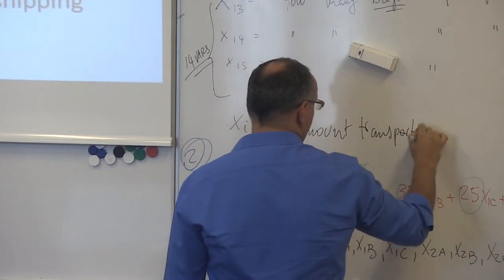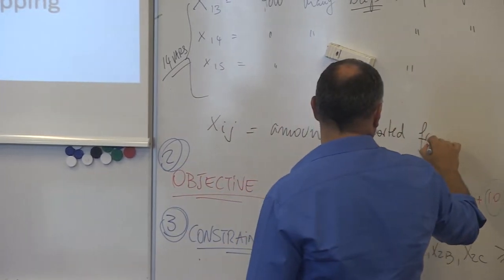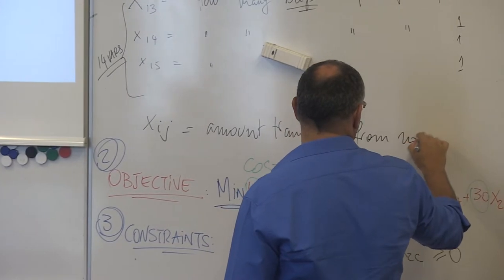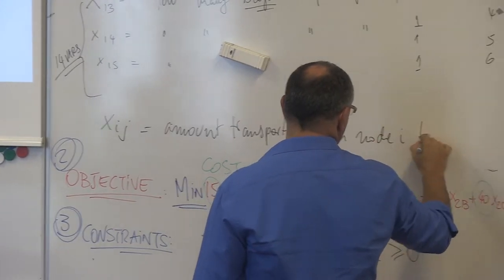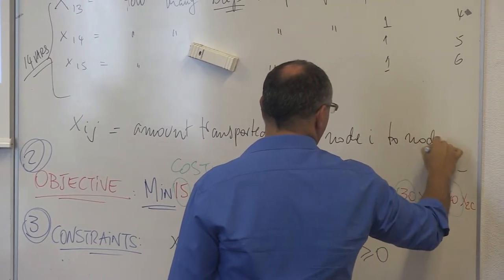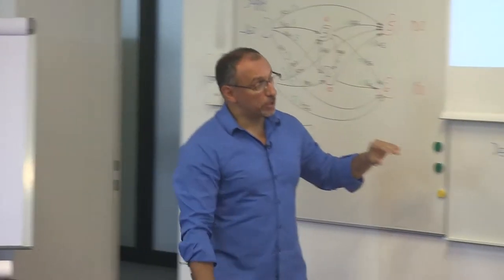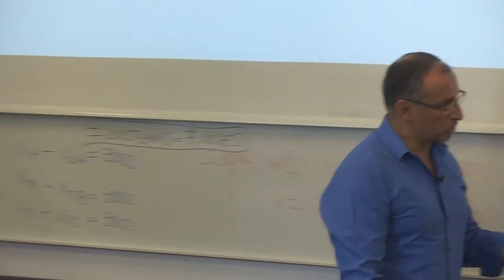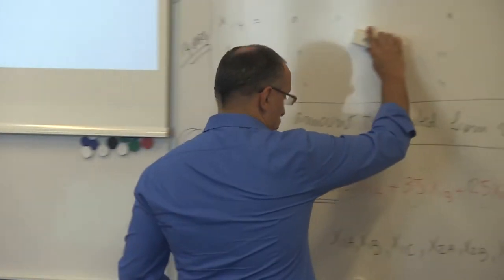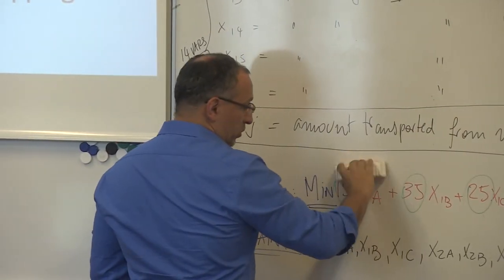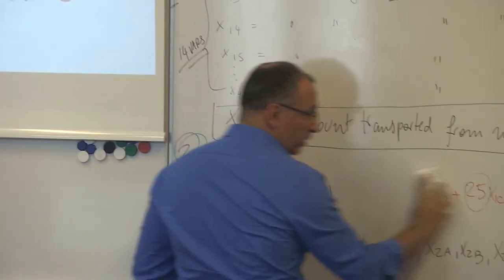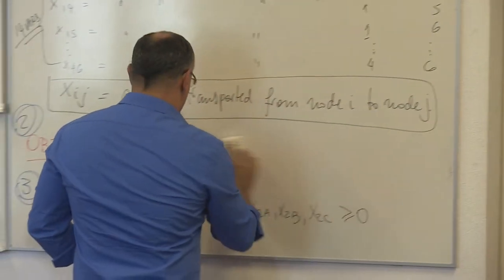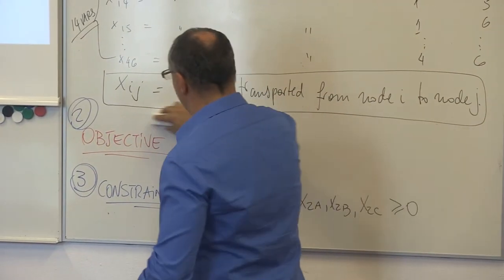Now we need to minimize the shipping plan, or the cost associated with the shipping plan. So it's still going to be similar to what we had before. How many terms will our objective function have? As many terms as there are variables, right?